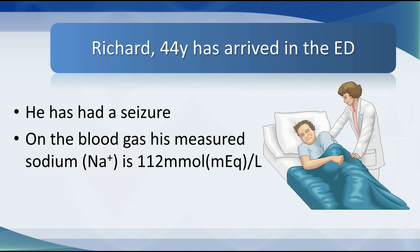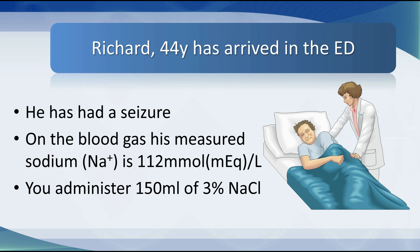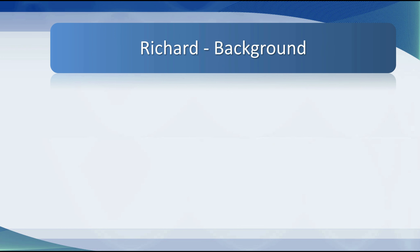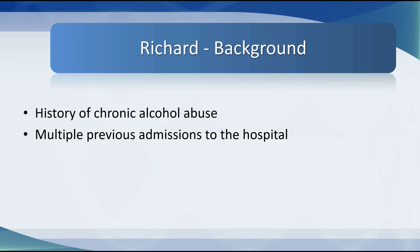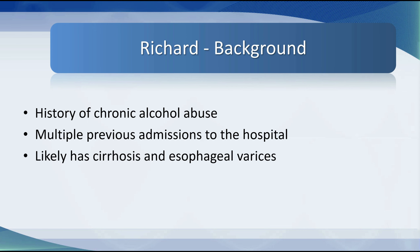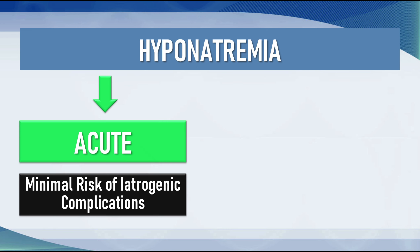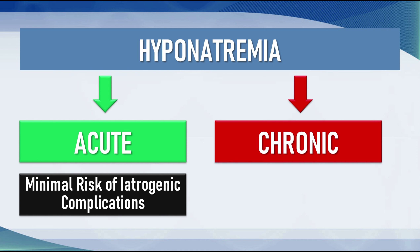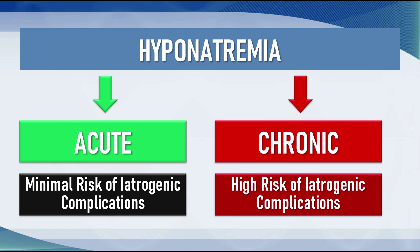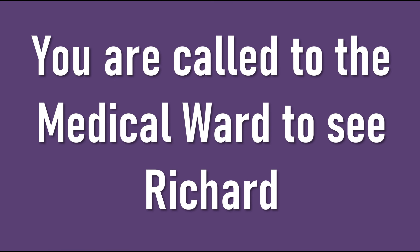Richard is 44 years old and came into the emergency room following a seizure. On blood gas analysis, his measured sodium is 112 millimoles per litre. He has a history of chronic alcohol abuse, multiple previous admissions, likely cirrhosis and esophageal varices — so this is unlikely to be an acute problem. When we look at hyponatremia early in the workup, we need to determine whether this is acute — with minimal risk of iatrogenic complications — or whether the patient has had hyponatremia for a significant period of time and is relatively high risk.